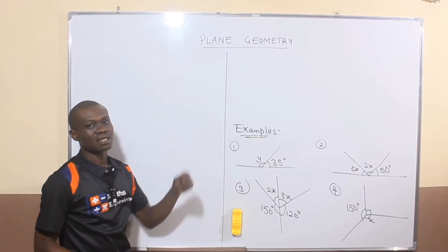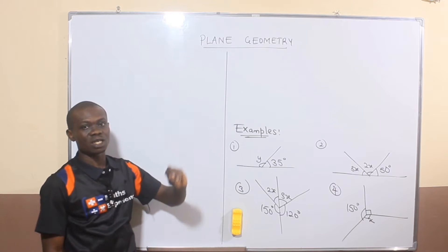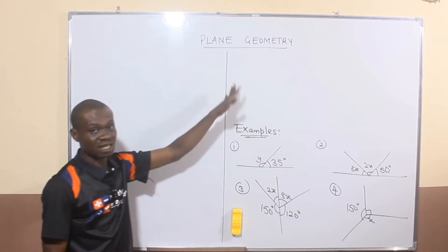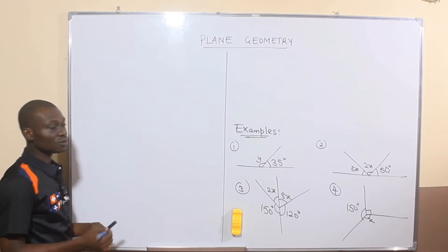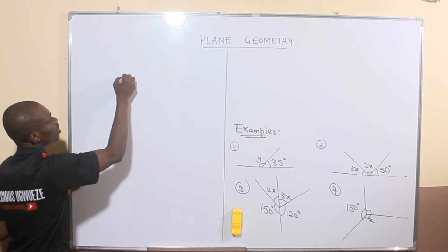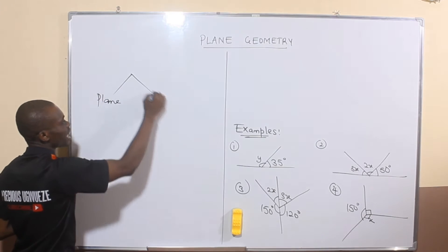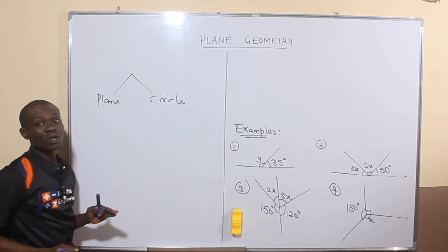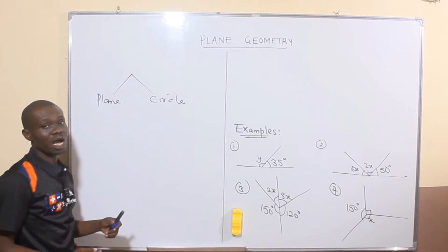Today we want to look at the concept of plane geometry. By the name it's already obvious that there is another kind of geometry besides plane geometry. For high school students, in geometry generally we have two types: plane geometry and circle geometry.